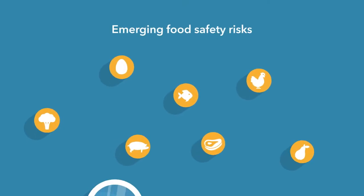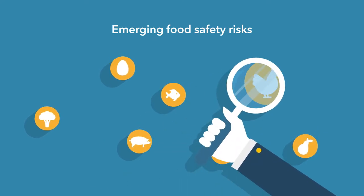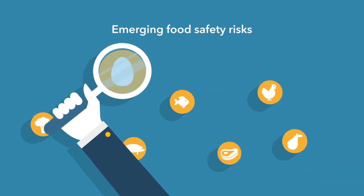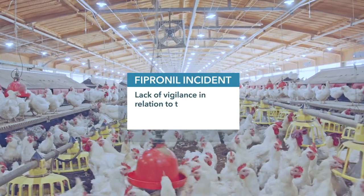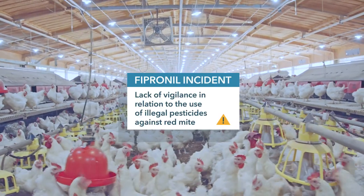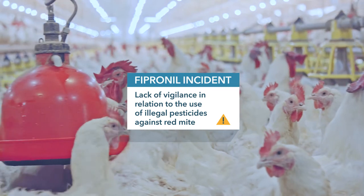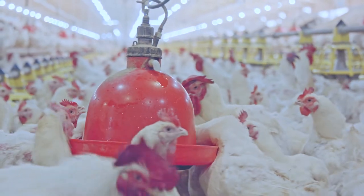The Dutch Safety Board has investigated a number of examples of emerging food safety risks. In the fipronil incident, it was shown that the use of illegal substances against red mites in laying hens was not recognised as a risk, despite the fact that this had occurred previously.